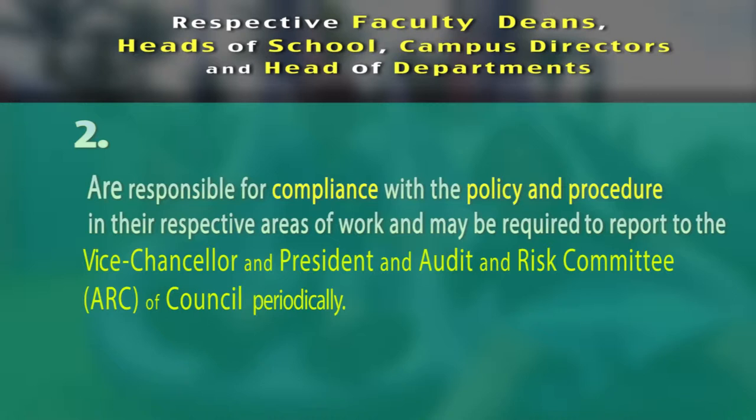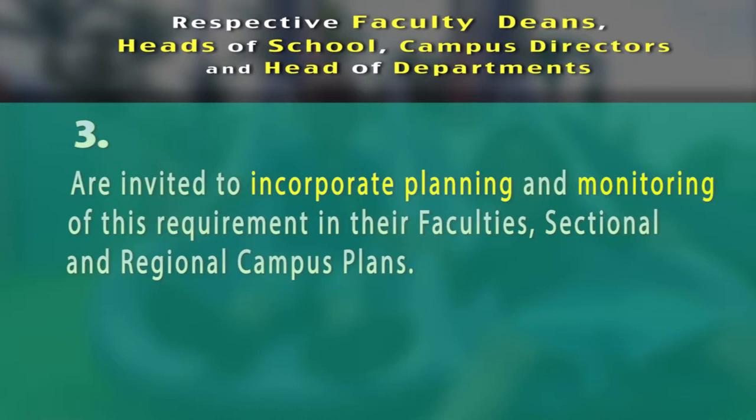Number two: they are responsible for compliance with the policy and procedure in their respective areas of work and may be required to report to the Vice-Chancellor and President and Audit and Risk Committee of Council periodically. Number three: they are invited to incorporate planning and monitoring of this requirement in their faculty's sectional and regional campus plans.